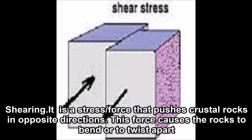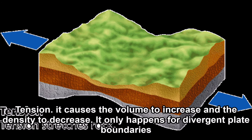Tension is a stress or force that pushes crustal rocks in opposite directions, causing the rocks to bend or pull apart. It causes the volume to increase and the density to decrease, and it only happens at divergent plate boundaries.